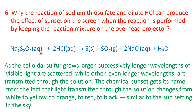Yellow light gets scattered, and then the transmitted light will appear as orange. Then from orange it changes to red. Then finally black — meaning all the lights are scattered and there is no transmitted light. Chemical sunset gets its name from the fact that light transmitted through the solution changes from white to yellow to orange to red to black, similar to the sun setting in the sky.